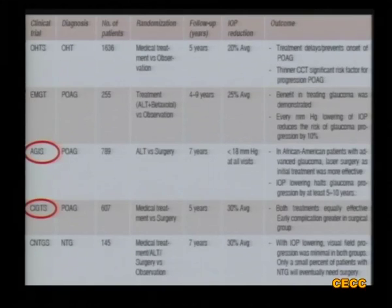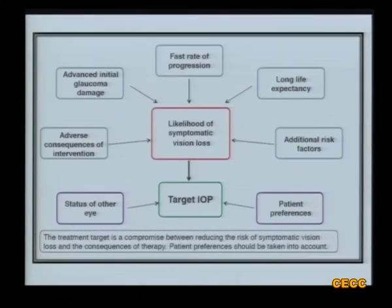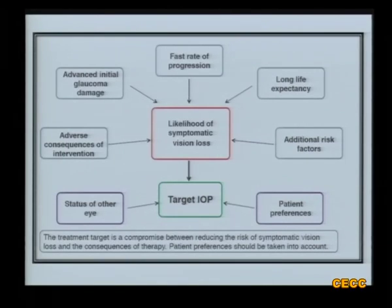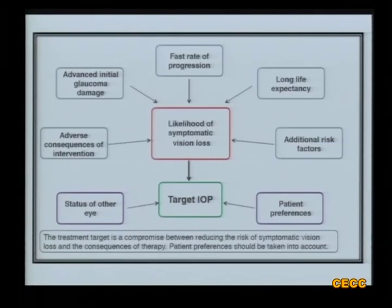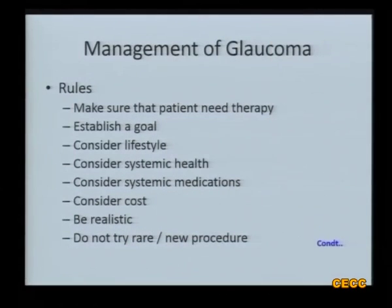In all cases of glaucoma, we have to consider the life expectancy of the patient and additional risk factors, especially myopia, diabetes, and other local problems, as well as patient preferences. Some patients, even with very high intraocular pressure, are not bothered to use three or four drops. Also consider the status of the other eye — whether surgery was done, whether there were complications or good IOP control, and the extent of initial glaucoma damage and rate of progression.